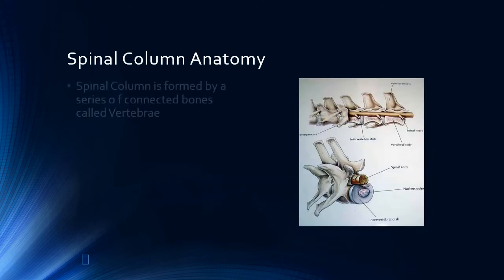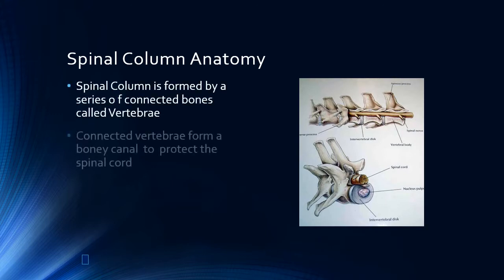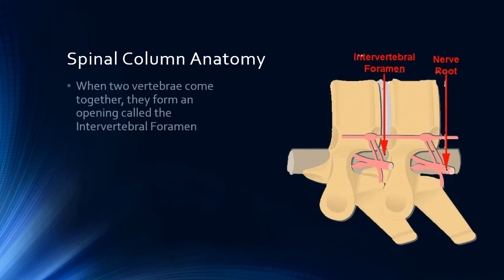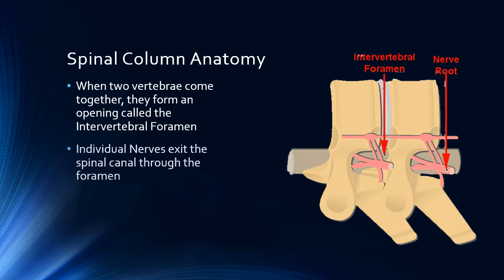The spinal column is formed by a number of bones called vertebra. These individual bones are joined together to form a protective tunnel or canal in which the spinal cord is protected. Each pair of bones is separated by a semi-flexible cushion called the intervertebral disc, which allows the spinal cord to bend and flex without losing its integrity. When two vertebra come together, they form an opening called the intervertebral foramen, through which spinal nerves leave the spinal cord and enter the tissue that they supply.